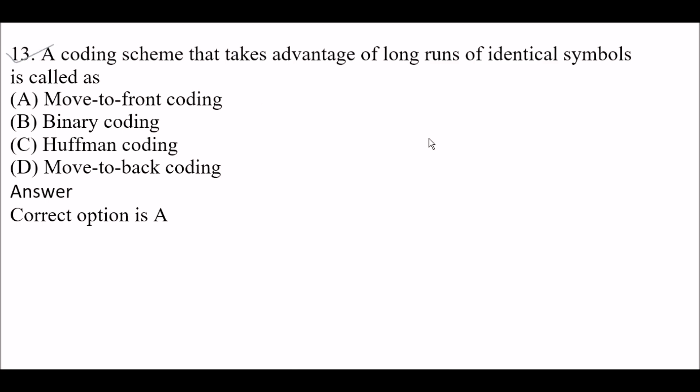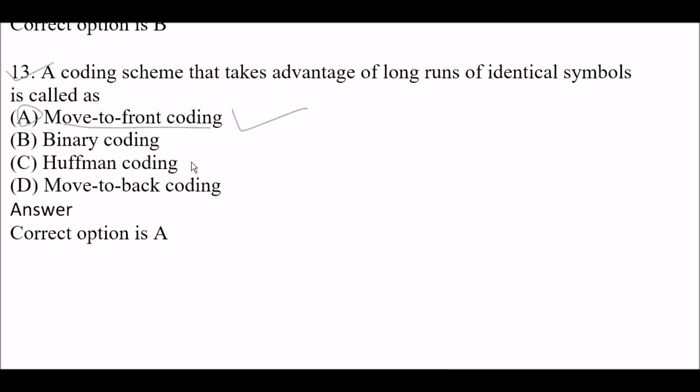Next question: A coding scheme that takes advantage of long runs of identical symbols is called — Option A: Move-to-front coding. Option B: Binary coding. Option C: Huffman coding. Option D: Move-to-back coding. The right answer is Option A — move-to-front coding. A coding scheme that takes advantage of long runs of identical symbols is called move-to-front coding.